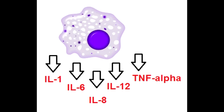Name all the cytokines secreted by T-helper-2 cells. T-helper-2 cells secrete interleukin-4, interleukin-5, and interleukin-10. So remember, macrophages and T-cells are the two most important cells that secrete cytokines.